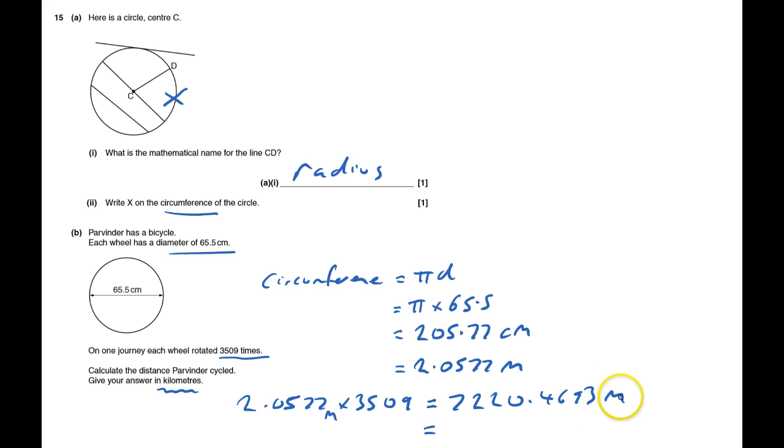So to turn it into kilometers, I divide by a thousand, and that decimal place will go 1, 2, 3. So it will be 7.22 kilometers to two decimal places. It doesn't say how accurate to give it, but it does say to give it in kilometers. And that's question 15 done.